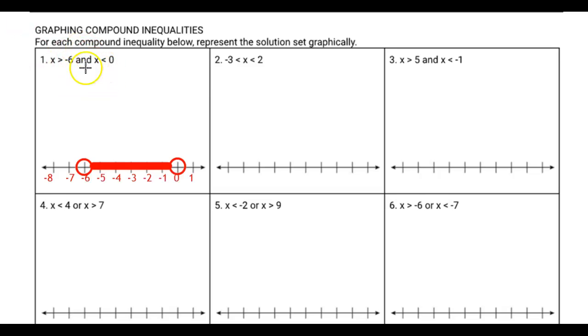For this first problem, we know that it is x is greater than negative 6 and x is less than zero. This AND indicates that it will be a convergent inequality. The first part says x is greater than negative 6. So we go to negative 6 on the number line, we put a circle on that. Since it's greater than and not greater than or equal to, we're not going to fill in that circle. And then x is greater than that, it's bigger than that, so I'm going to start shading upwards.